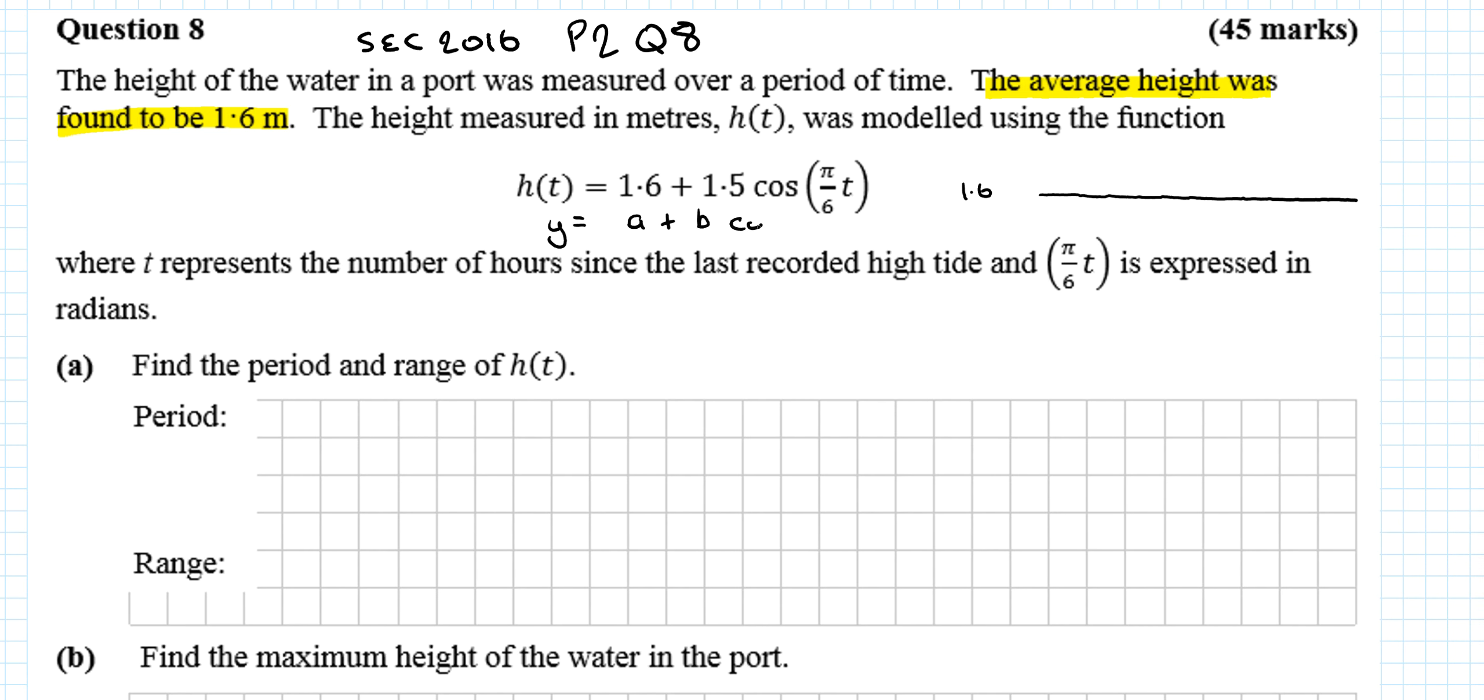The model is y equals a plus b cos c of t, where t is our variable. We know each of a, b, and c influence different aspects. a influences the midway line. b influences the amplitude - that is how far above and below the midway line our graph will go. So it goes 1.5 above to 3.1 and 1.5 below to 0.1. c influences the period.